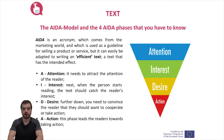I — Interest: next, when the person starts reading, the text should catch the reader's interest. For example, by showing in short what they will find in the text, what is in it for them, why they should continue reading, and what are the advantages and benefits.